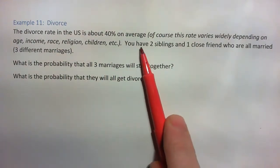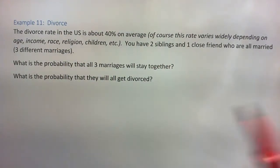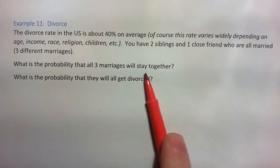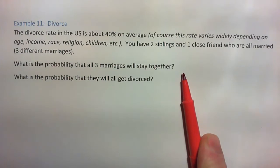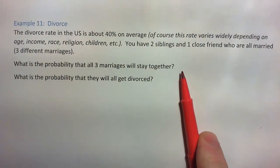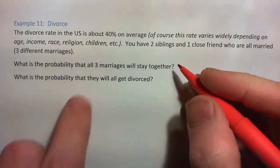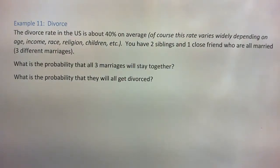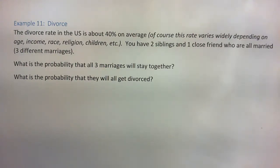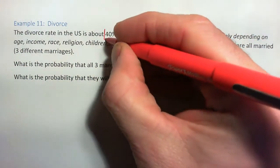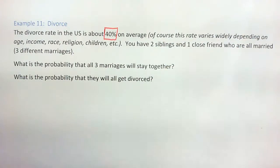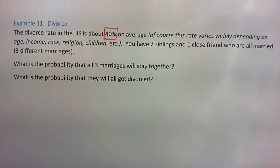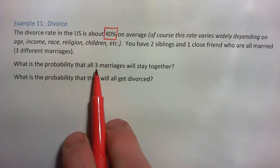Let's say you've got two siblings and one close friend — they're all married — or you've got three separate marriages. What's the probability that all three marriages will stay together? Press pause and get the answer. We can dig in and get different likelihoods depending on the particular marriage, but just for fun we'll say they all have the same probability as the average in the country.